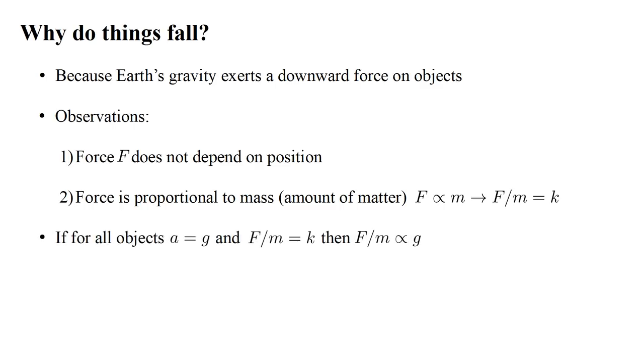Now if all objects experience the same gravitational acceleration g, and the ratio of force to mass is the same constant for all objects, then since it's trivially true that two constants are proportional to each other, we can write that gravitational force divided by mass is proportional to the gravitational acceleration.